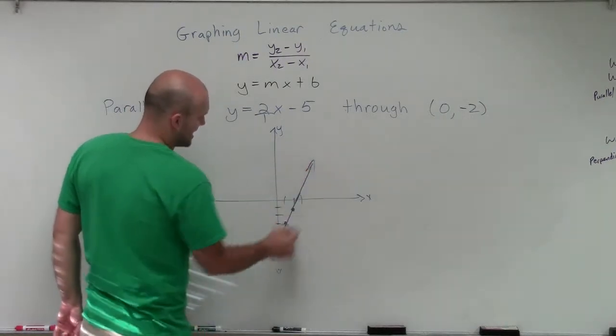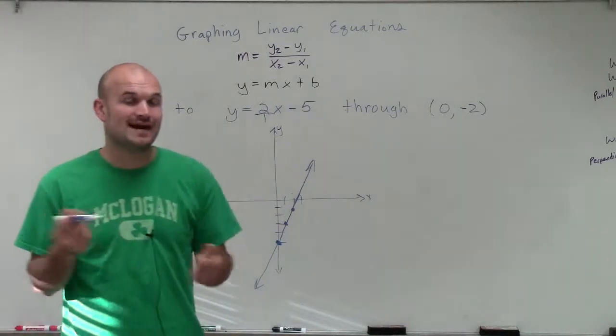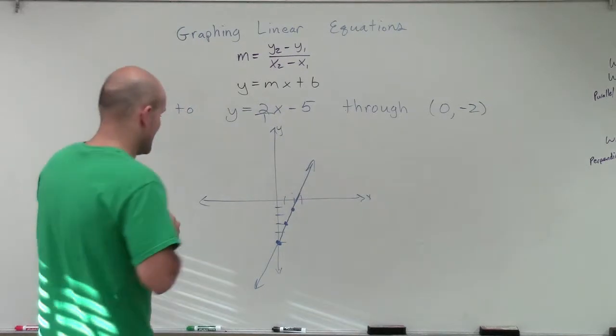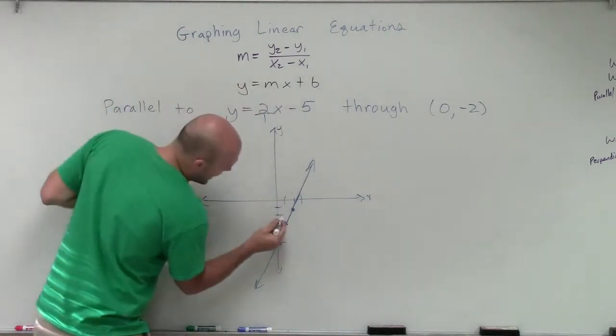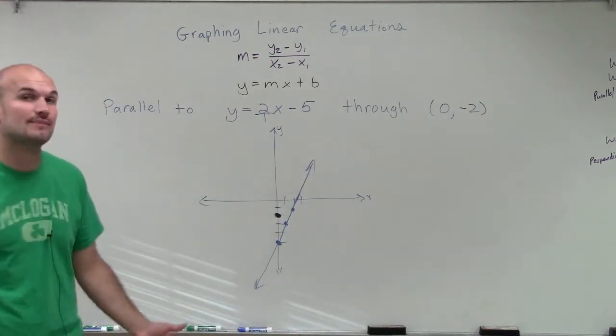So you can see that this line is going to look like this. Now, I want to find a line that's going to be parallel to that. However, this new parallel line has to go through my new y-intercept, or a point of 0, comma, negative 2.